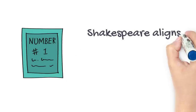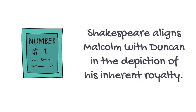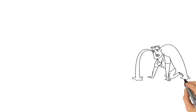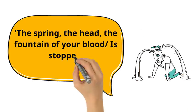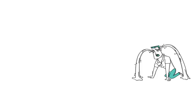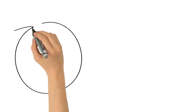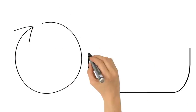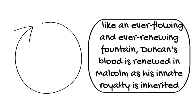Firstly, Shakespeare aligns Malcolm with Duncan in the depiction of his inherent royalty. When Macbeth falsely mourns Duncan after he has killed him, he proposes to Malcolm that 'the spring, the head, the fountain of your blood is stopped.' Macbeth's belief that the blood of Duncan has stopped flowing is undermined by the metaphor of the fountain, which demonstrates the power of the royal lineage. Like an ever-flowing and ever-renewing fountain, Duncan's blood is renewed in Malcolm as his innate royalty is inherited.